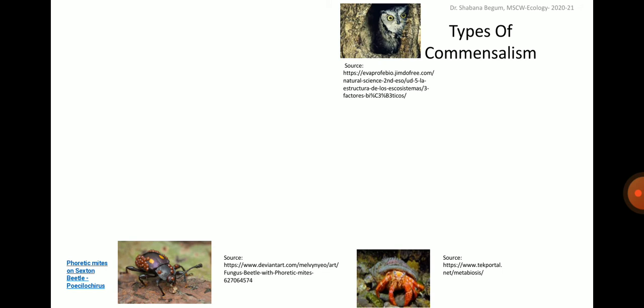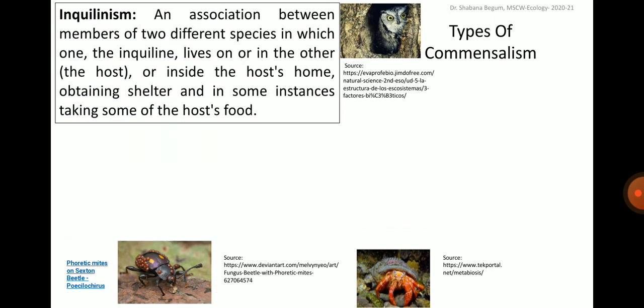Now let's learn about the types of commensalism. The first one is inquilinism — an association between members of two different species in which one, the inquiline, lives on or in the other, or inside the host's home, obtaining shelter and in some instances taking some of the host's food.